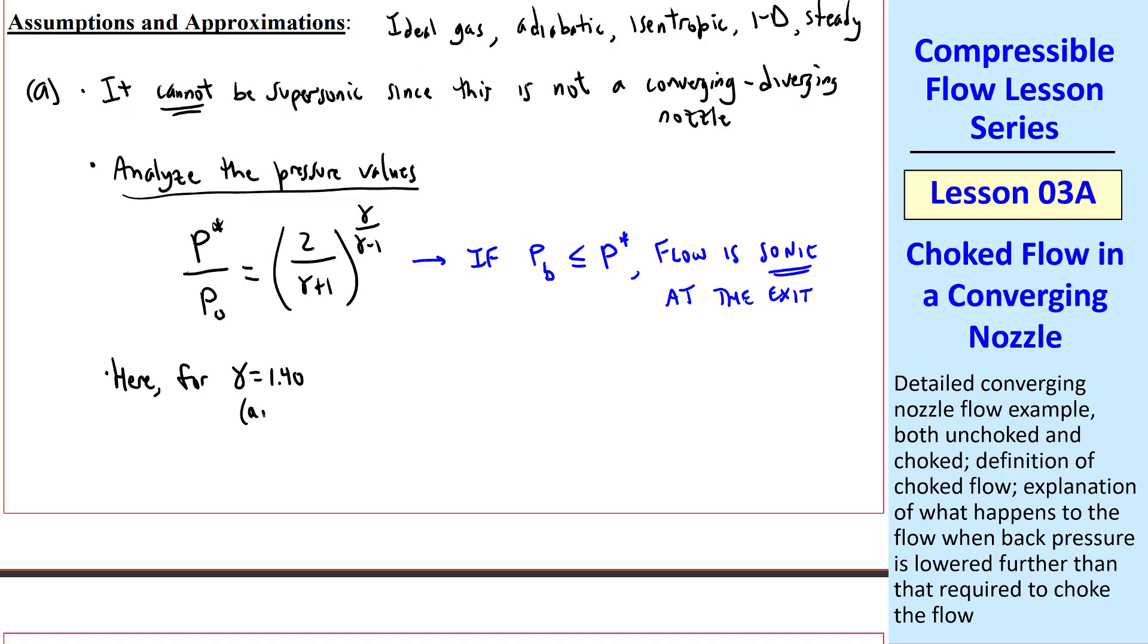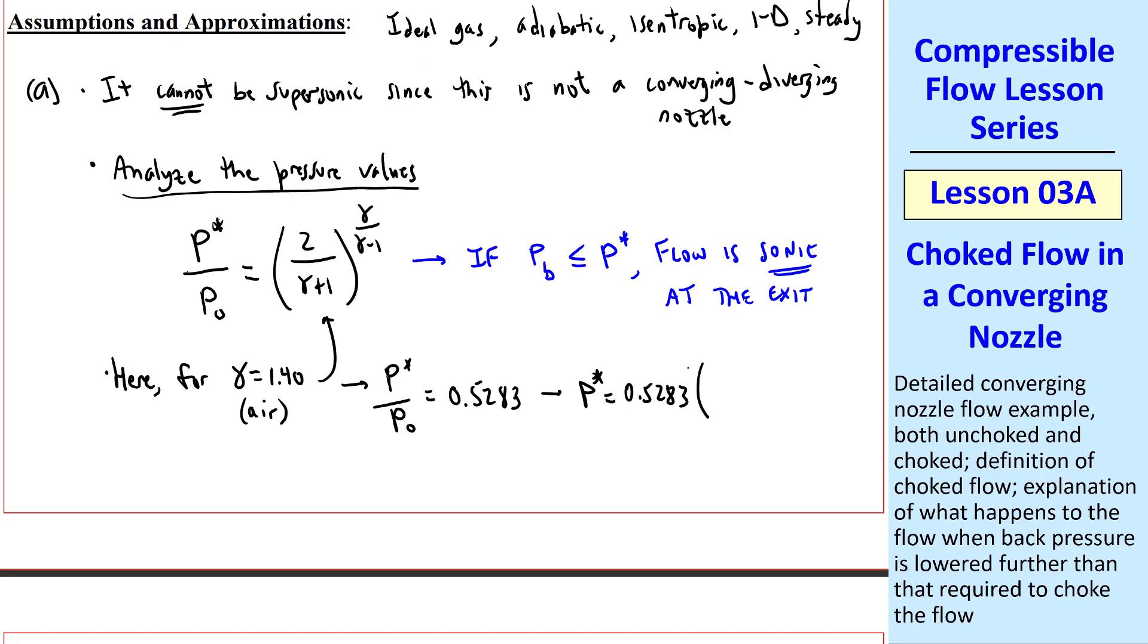Well, here for air, gamma is 1.40, which when plugged into this expression gives us P-star over P-naught is equal to 0.5283 to four digits. So the sonic or critical back pressure would be 0.5283 times our given P-naught, which is 158 kPa, which turns out to be 83.47 kPa.